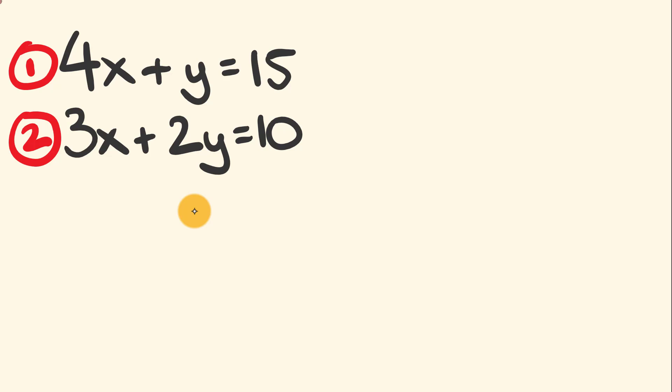The trick to solving this using the elimination method is to make one of the sets of variables, either x or y, the same for each equation. How do we do this? We're going to multiply entire equations. I'll show you what this means.